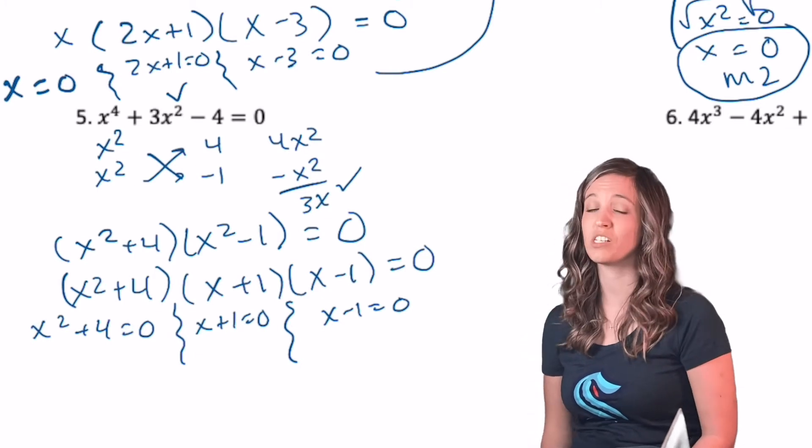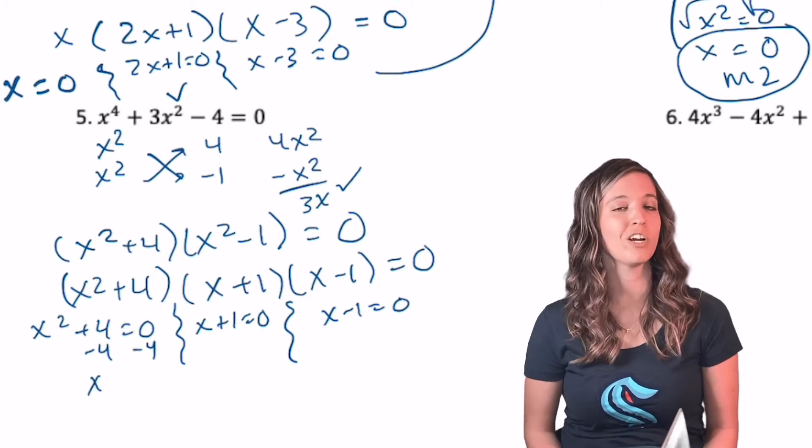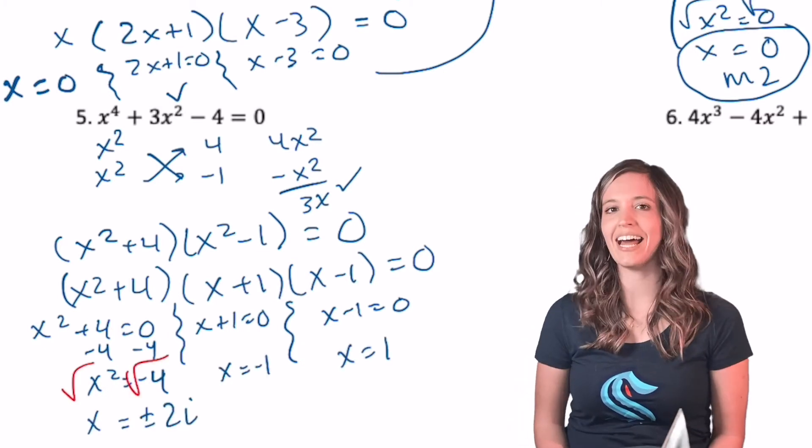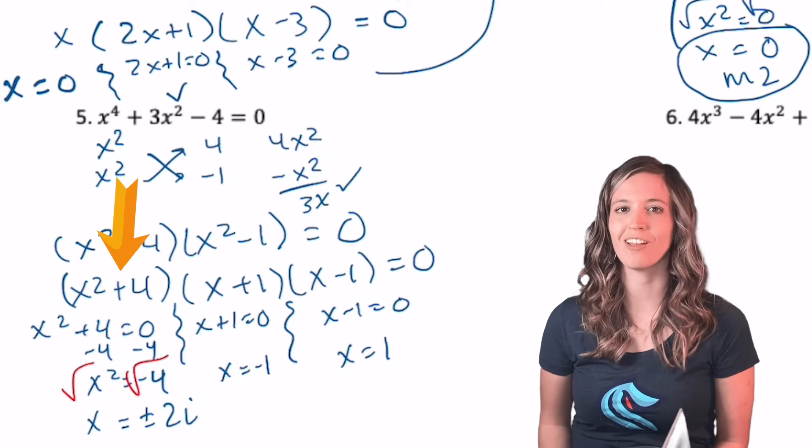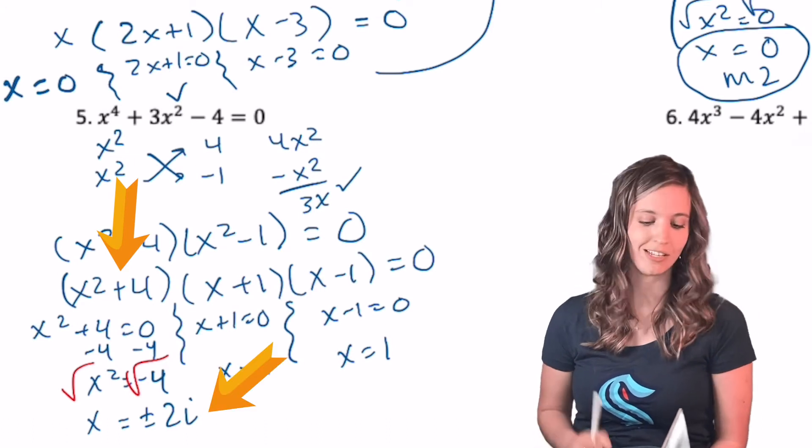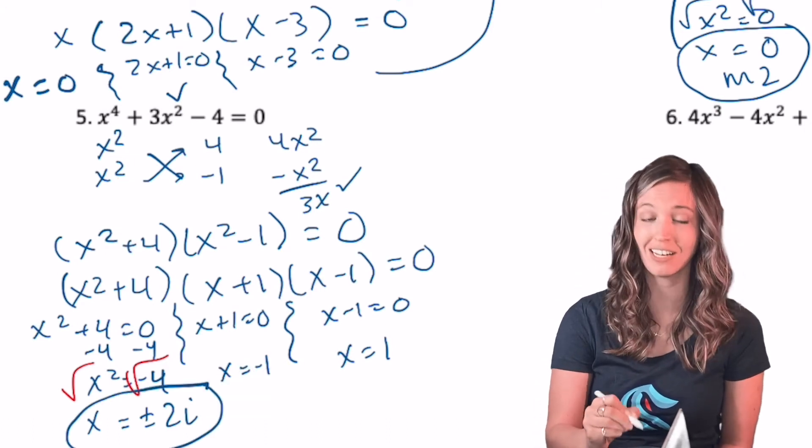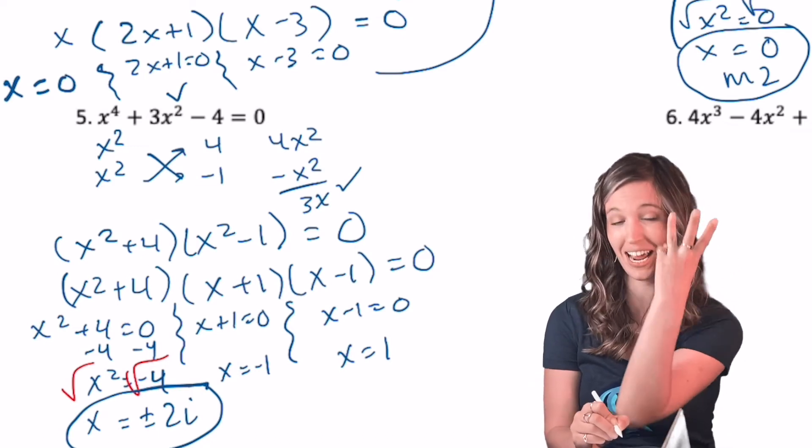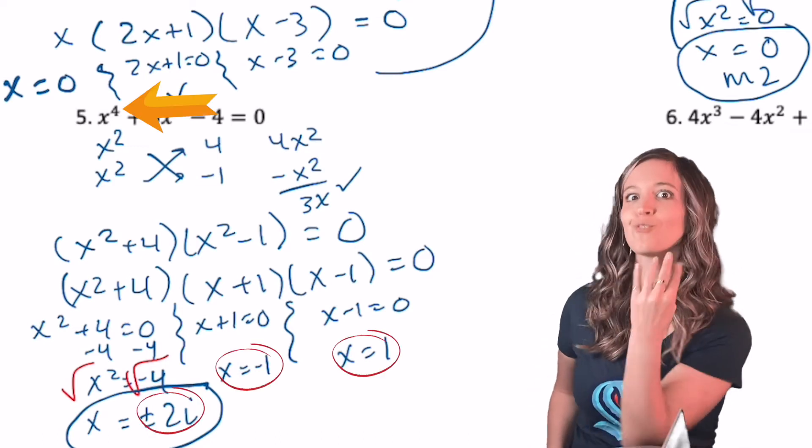As I said, X squared plus four equal to zero, I can solve by square roots, move my four over and square root both sides. Well, look at that. Now we see that an irreducible quadratic factor gives us imaginary solutions. I got X equals plus or minus two I. So there's two solutions. Then I got X equals negative one and X equals one. Four solutions for a quartic.